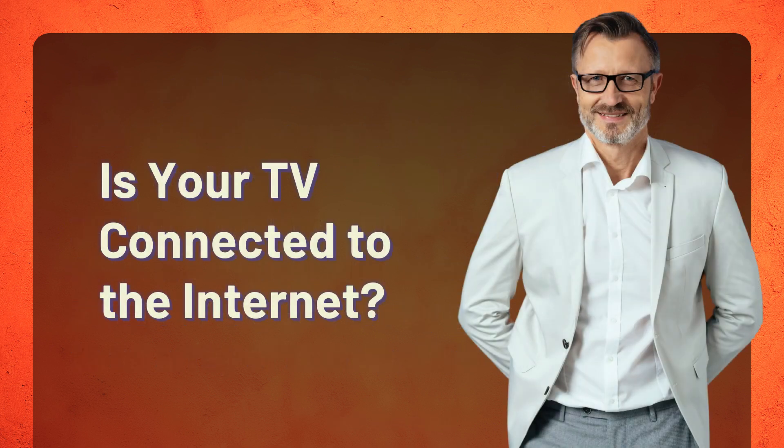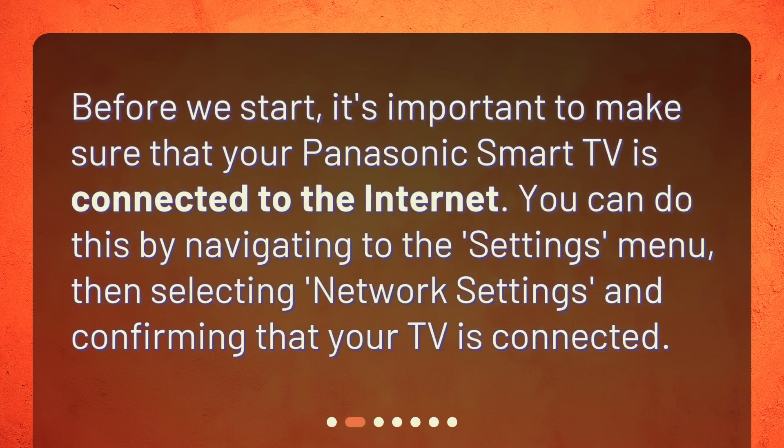Before we start, it's important to make sure that your Panasonic Smart TV is connected to the Internet. You can do this by navigating to the Settings menu, then selecting Network Settings and confirming that your TV is connected.